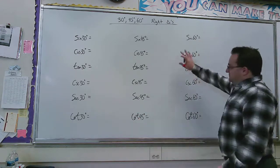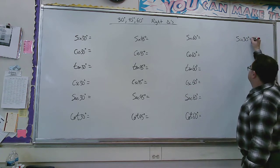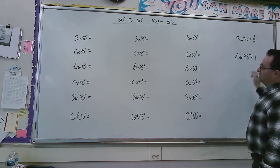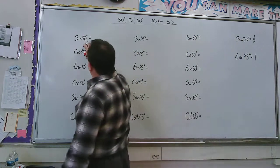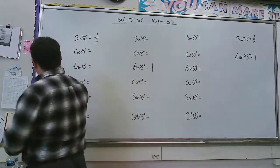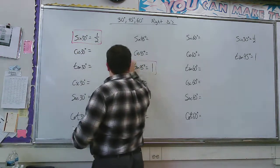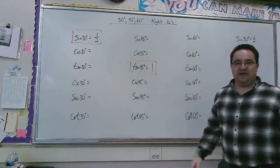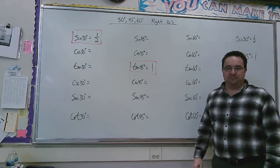So, believe it or not, you see all this information? If you just memorize these two facts. So that's two out of these 18. The sine of 30 degrees is a half, and the tangent of 45 degrees is one. If you memorize those two, I'm going to show you how you can get every one of these. All you've got to know is these two things and know what to do with them.